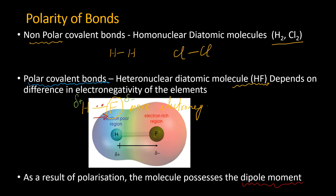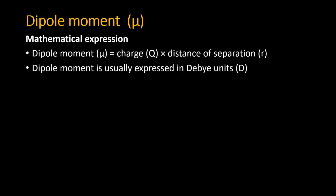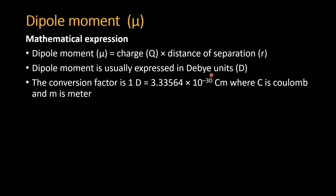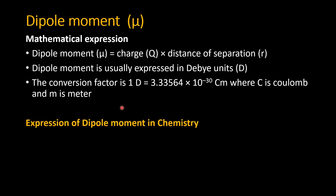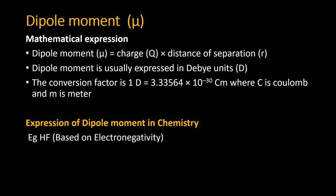The mathematical expression for dipole moment is: charge multiplied by the distance of separation. The unit of dipole moment is Debye (D), though the SI unit is coulomb meter. In chemistry, dipole moment is represented by an arrow where the head points toward the negative end and the tail has a vertical line indicating the positive end.